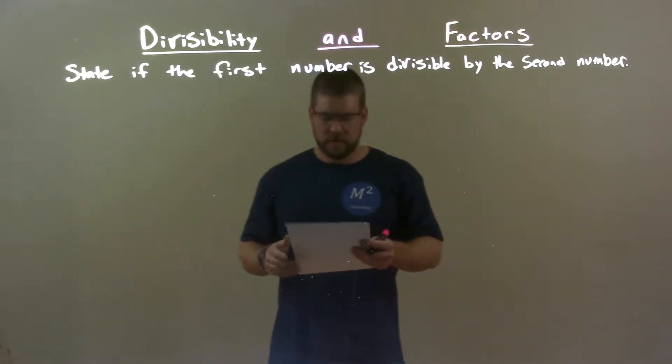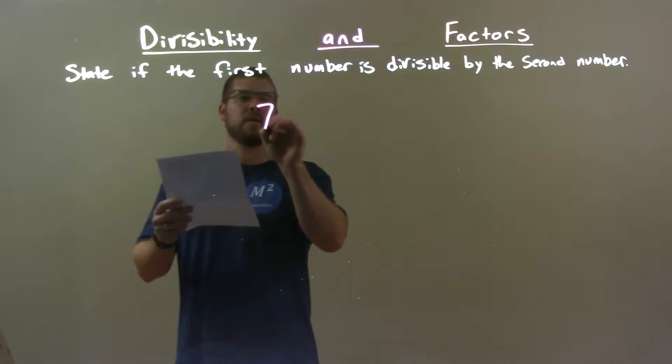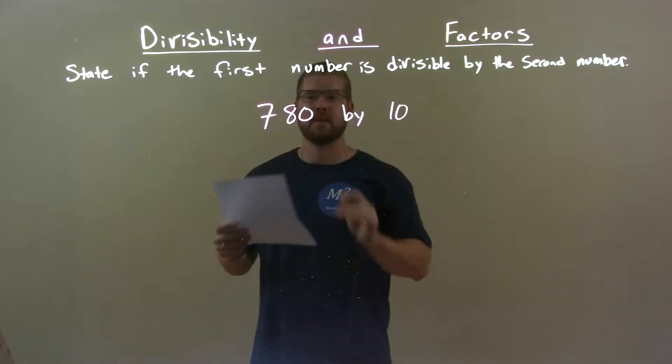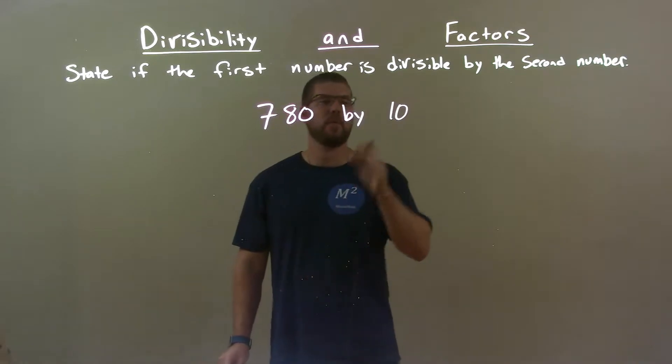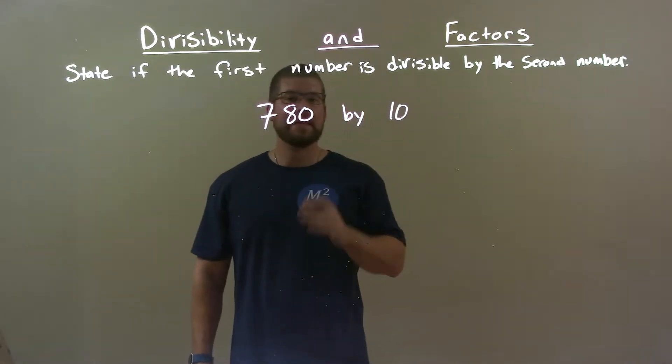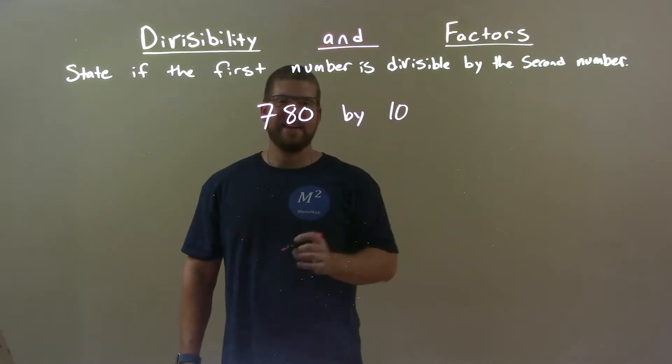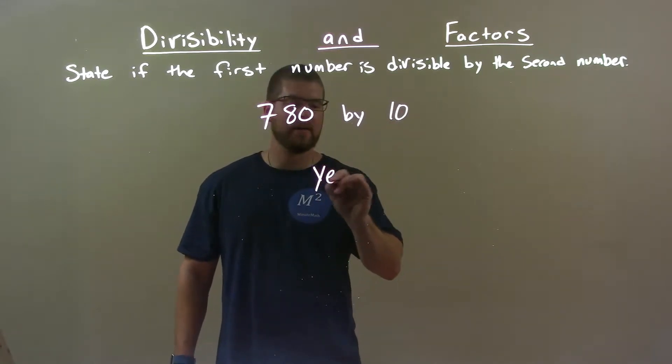If I was given these numbers, 780 by 10, is 780 divisible by 10? First clue is ending in 0. Since 780 ends in 0, it is divisible by 10. So the quick answer is yes.